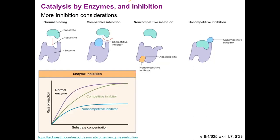There are different styles of inhibition. Moving from left to right: normal binding, competitive inhibition where an inhibitor binds to the enzyme's active site, non-competitive inhibition where an inhibitor binds to a different part of the enzyme causing it to not act on the substrate, and uncompetitive inhibition. The plot at the bottom shows how each type affects the rate at which substrates are acted upon - normal rate in purple versus the complete reduction or slowing down from non-competitive and competitive inhibition respectively.